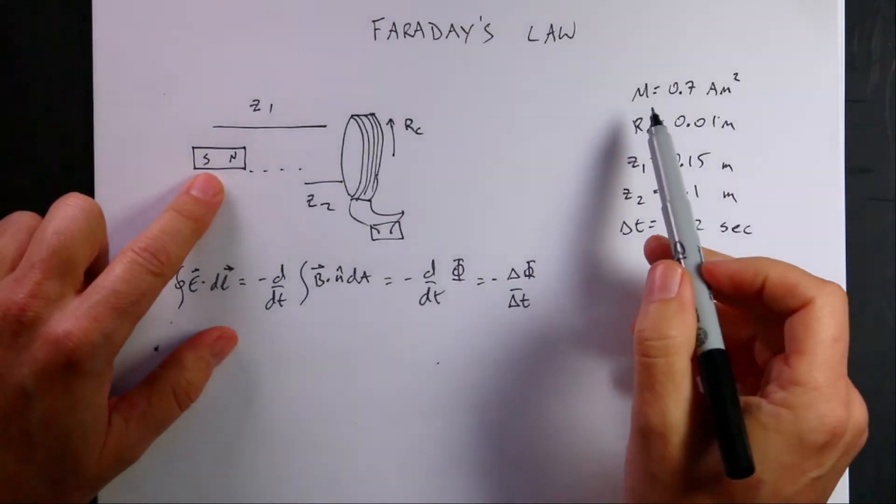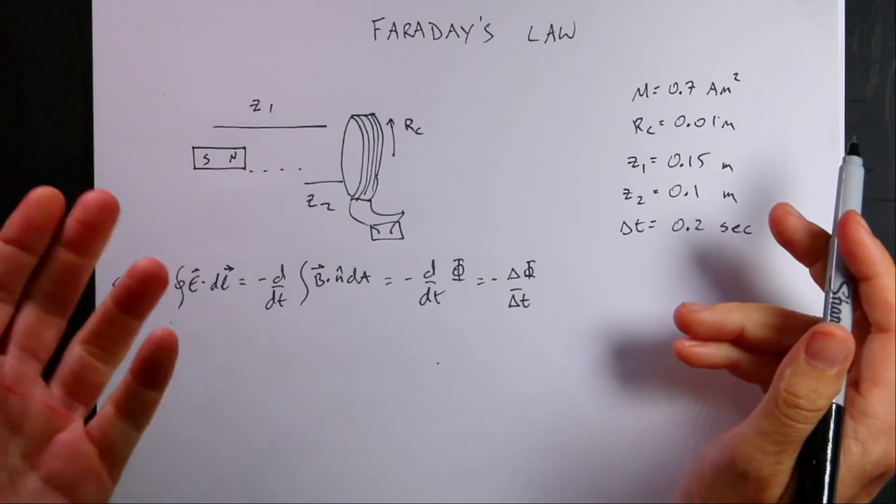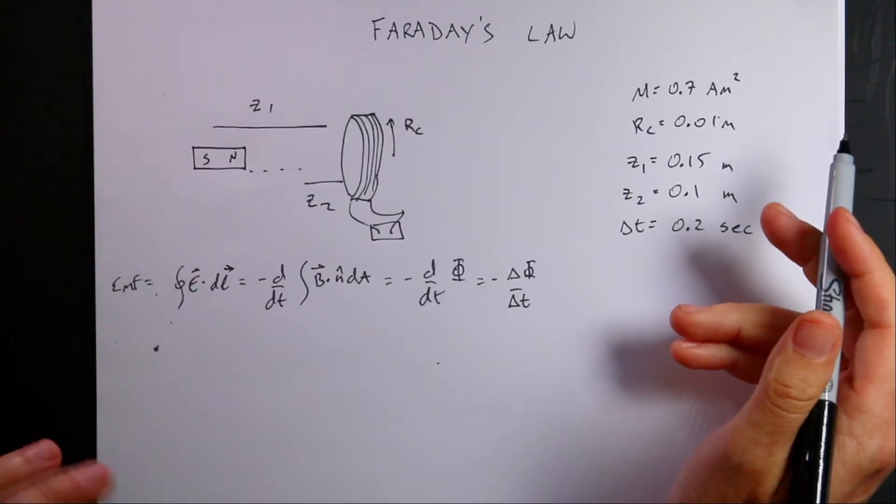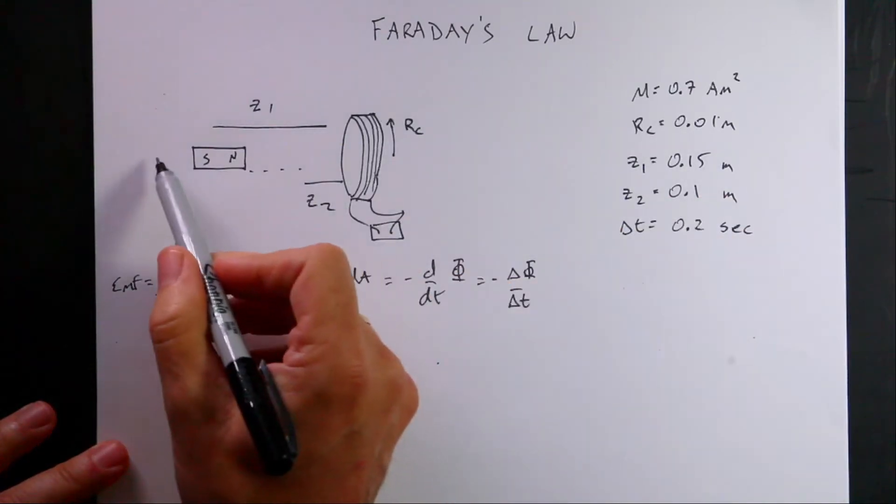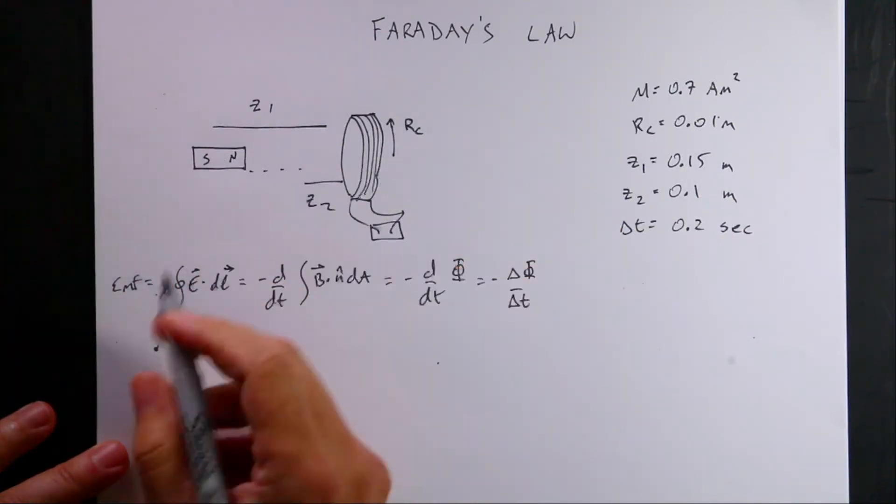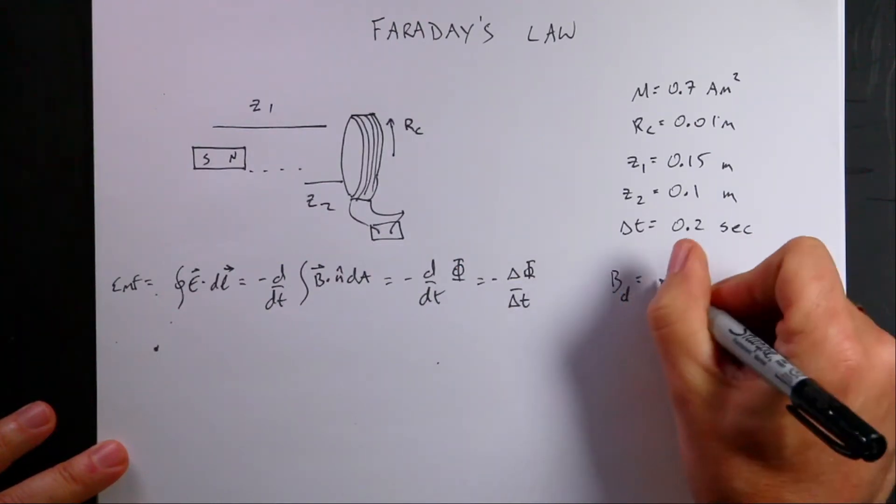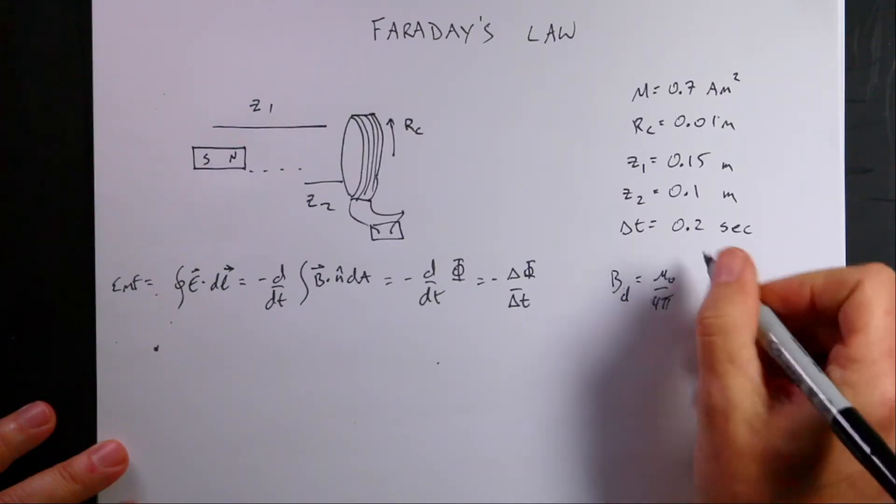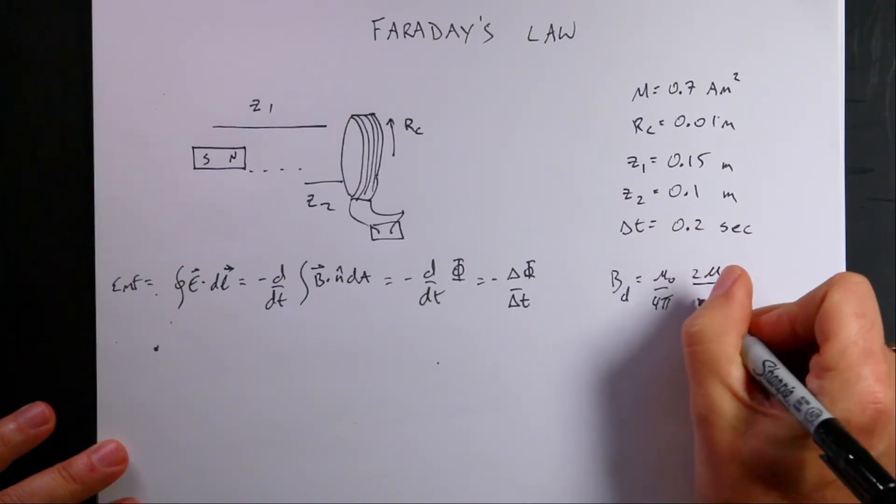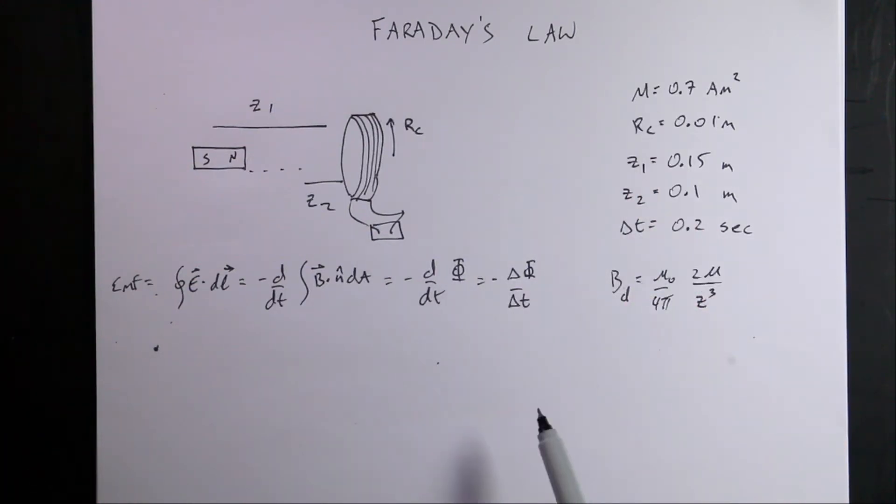So here, μ is the magnetic dipole moment of the bar magnet. So if I have a bar magnet and I treat it as a dipole, then it has a field that looks like an electric dipole. And so if we're on the axis of that dipole, I can write B dipole. The magnitude is going to be μ₀ over 4π. That's the magnetic constant. 2μ over Z cubed, where μ is that dipole moment right there.